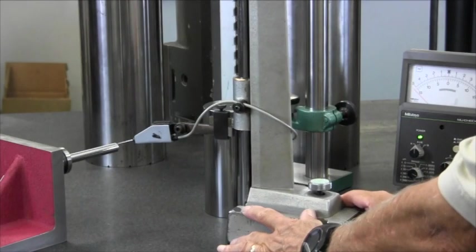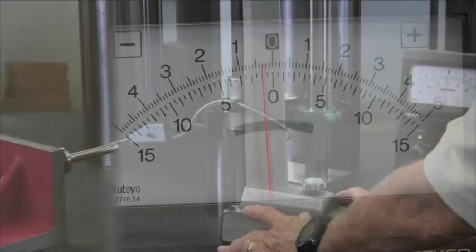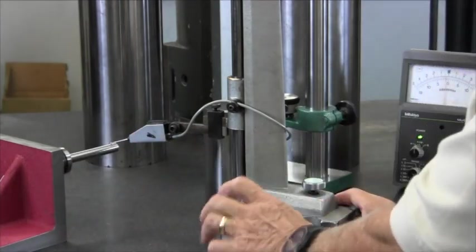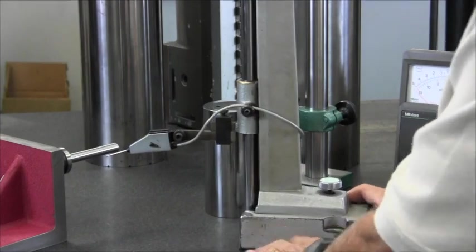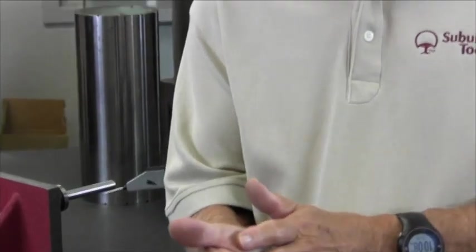And we're going to come over here and check it. And we got within two tenths. So we know that this angle plate is square, not parallel, but square within two tenths. So those are the three methods in which you can use to check for parallelism using cylinder squares.